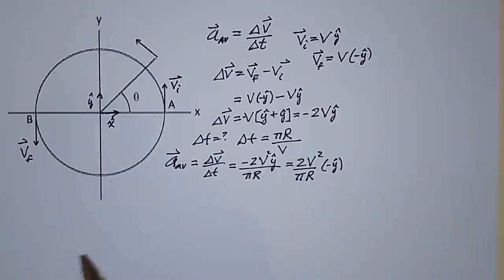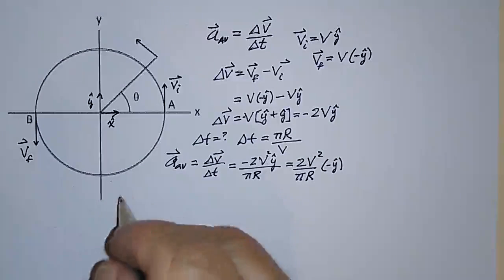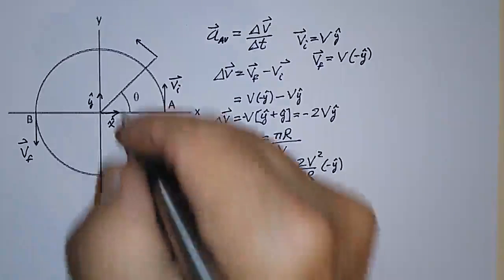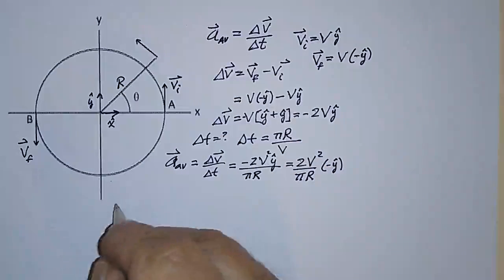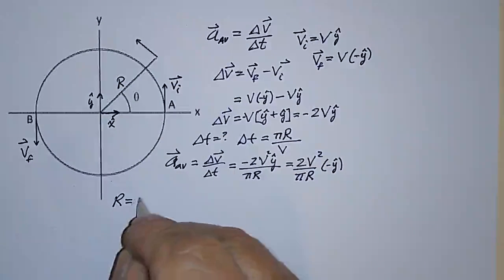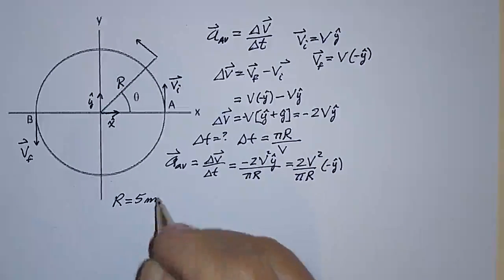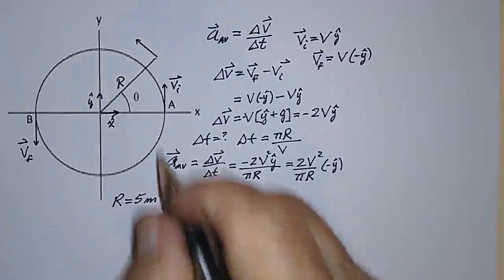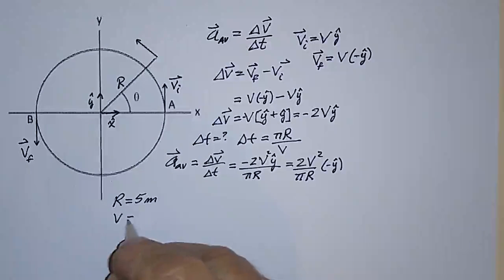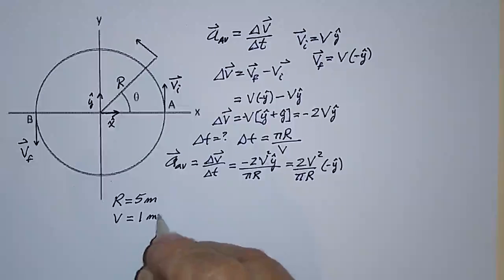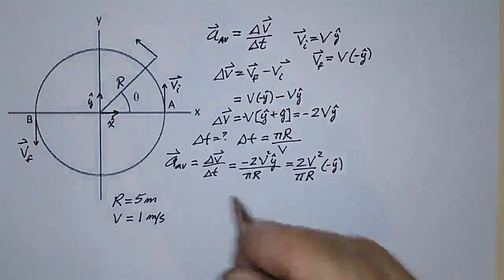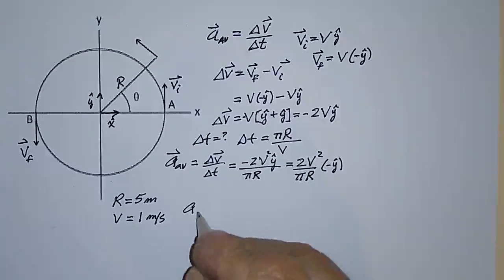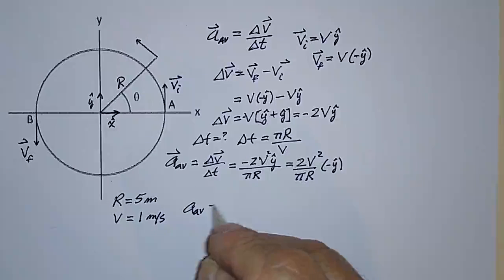The particular problem that they gave had, I believe, the radius, which is this, the radius was equal to 5 meters, and the speed, V, was equal to 1 meter per second. So that would mean that the magnitude of the average acceleration is just